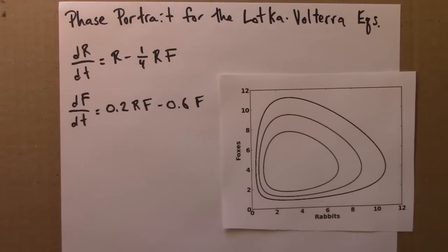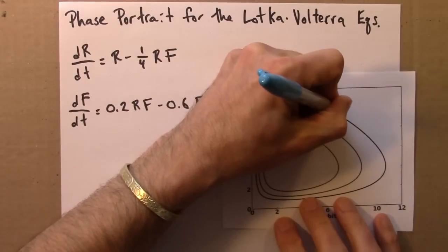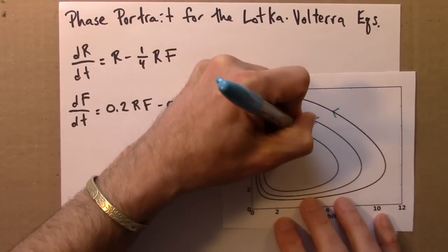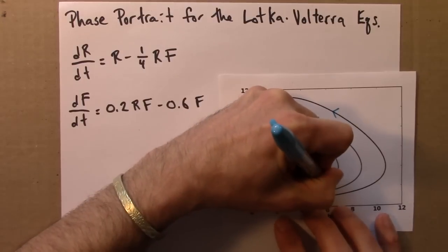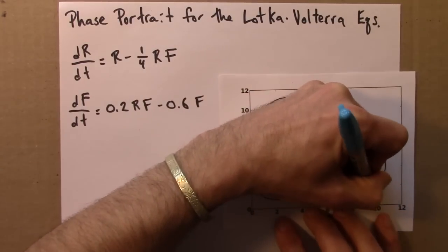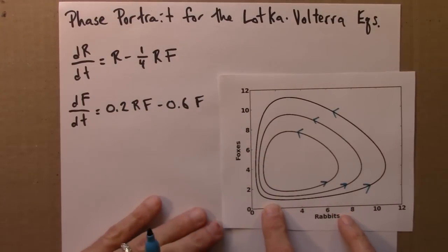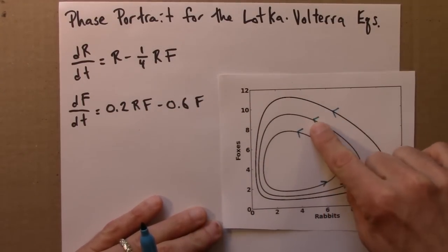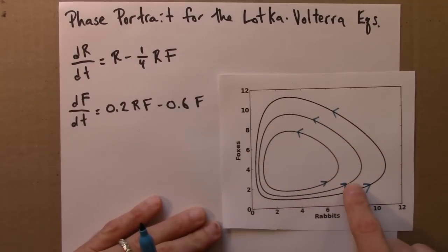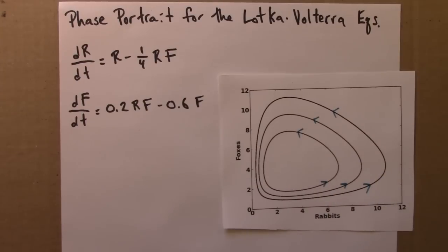Let me put some arrows on this. So all of these curves are going in the same direction. So this outer curve is the one we had before. Around and around it goes. With a different initial condition, we get a different cycle. And a different initial condition, we get a different cycle still. So each of these cycles, it turns out, is neutral.